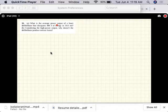All right, so this problem says what is the average power output of a heart defibrillator that dissipates 400 joules of energy in 10 milliseconds.